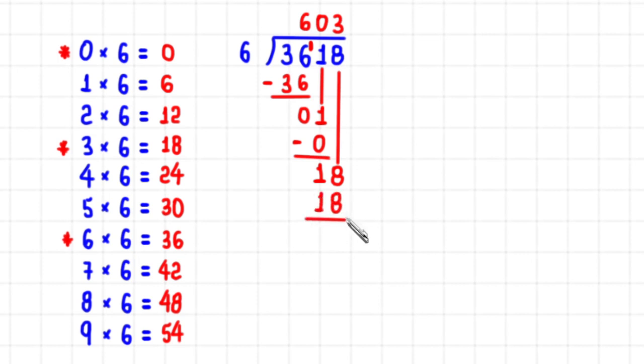3 times 6 is 18. Another easy subtraction. Don't you agree? Yes. What is 18 minus 18? 0.